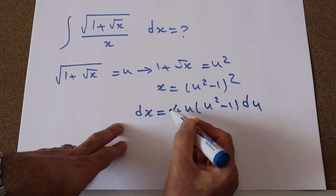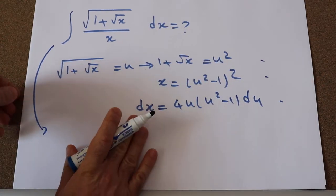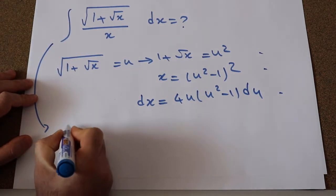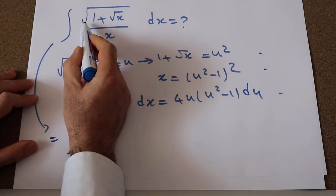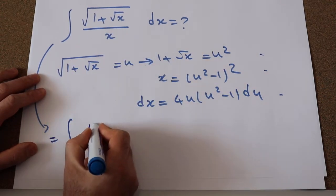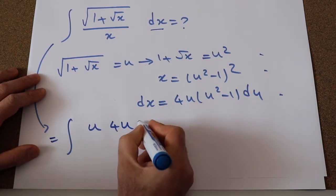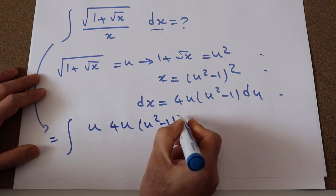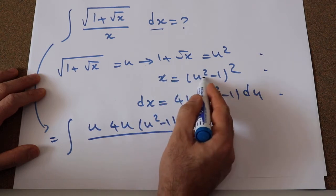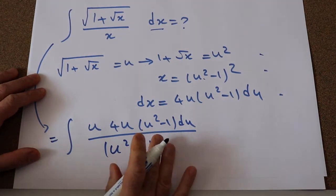So all you need to do here is to substitute this expression into this integral. If you do that, you can rewrite this integral as: instead of square root of 1 plus square root of x, I simply write u. And instead of dx, I write 4 times u times (u squared minus 1) times du, divided by x — and we know x is equal to (u squared minus 1) squared.